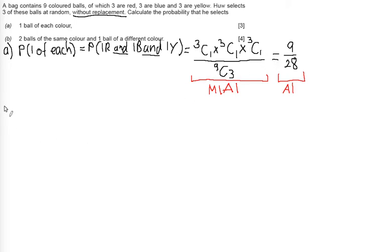Looking at part B, part B is two balls of the same color, one other. So we're saying P, probability 2 the same, one other. Let's think about the ways that this can happen. First of all, I could pick two reds and one other.